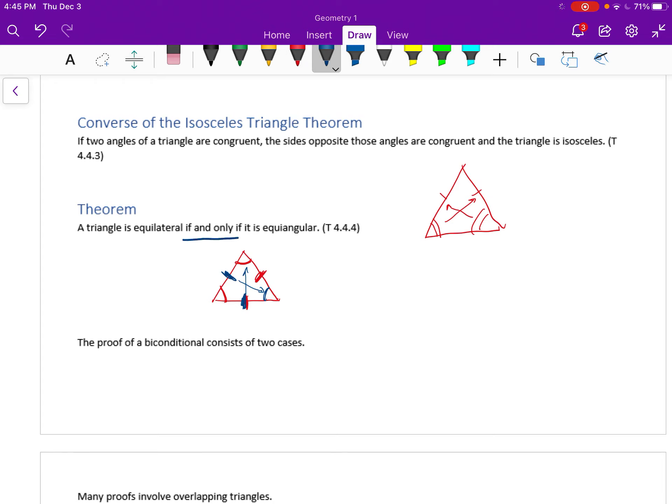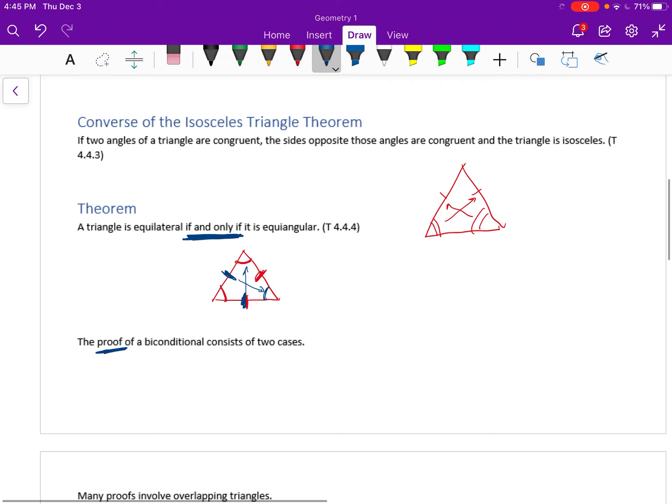Now, this is a biconditional statement. So if it's a biconditional statement, both ways are true. So if it's equilateral, then it's equiangular. Or if it's equiangular, then it's equilateral. To prove a biconditional statement, you actually do two proofs. You have one given and prove for the first idea, and then you have to prove another thing with a different given and prove. And really, the given and prove end up being switched.